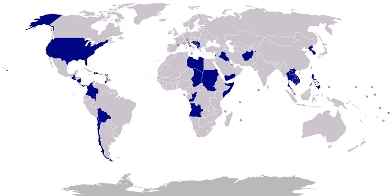1989, Philippines, Operation Classic Resolve: on December 2, 1989, President Bush reported that on December 1, Air Force fighters from Clark Air Base in Luzon had assisted the Aquino government to repel a coup attempt. In addition, 100 Marines were sent from U.S. naval base Subic Bay to protect the United States Embassy in Manila. 1989–1990, Panama, United States Invasion of Panama, Operation Just Cause: on December 21, 1989, President Bush reported that he had ordered U.S. military forces to Panama to protect the lives of American citizens and bring General Noriega to justice. By February 13, 1990, all the invasion forces had been withdrawn. Around 200 Panamanian civilians were reported killed. The Panamanian head of state, General Manuel Noriega, was captured and brought to U.S. military forces.